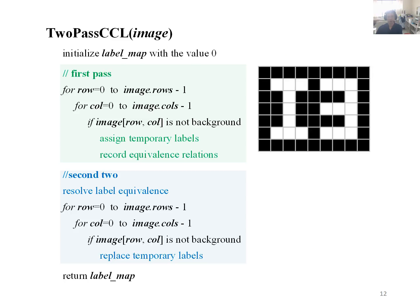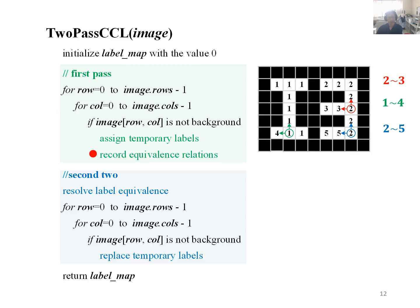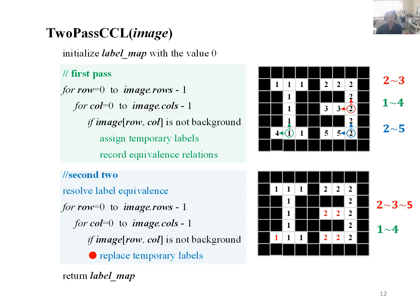Here shows the pseudo-code of the two-pass algorithm. At each pass, it scans from left to right and top to bottom, and skips the background points. In the first pass, it assigns temporal labels and then records the equivalence relations between labels. In the second pass, it firstly resolves the equivalence relations to obtain the equivalence classes, and then the smallest value is used to replace the temporal labels. Next, we detail each step in the two-pass algorithm for connected component labeling.